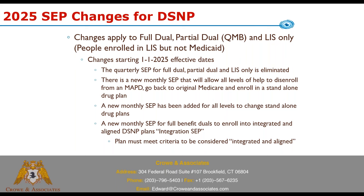These changes start with effective dates of 1/1/2025 — this AEP basically. To start: the quarterly SEP for full dual, partial dual, and LIS is eliminated. It's gone. The quarterly SEP that we're used to — where somebody who has Medicaid, drug help, or something like that can change plans — that is no longer available for any business written for 1/1/2025 effective dates.